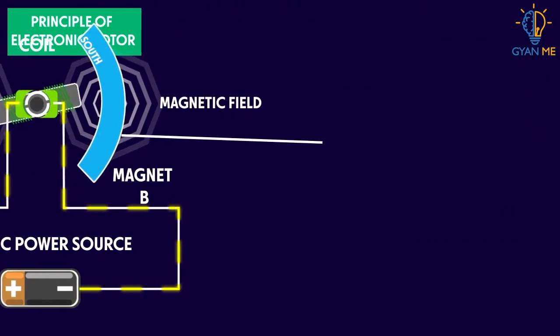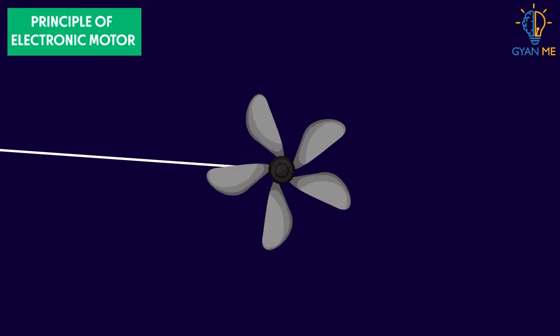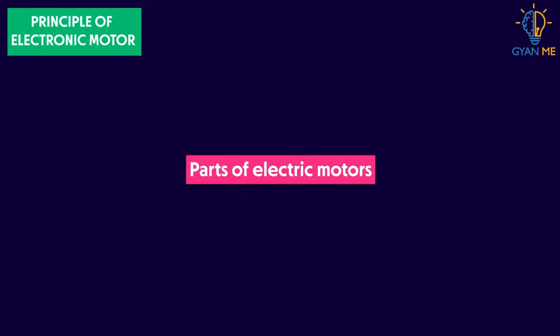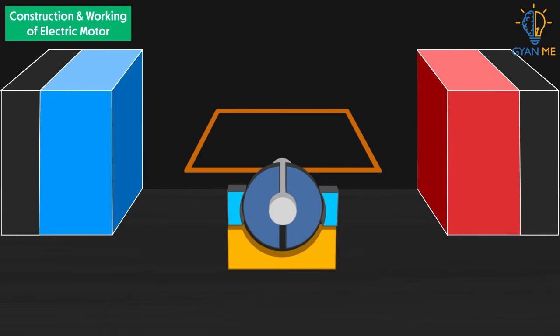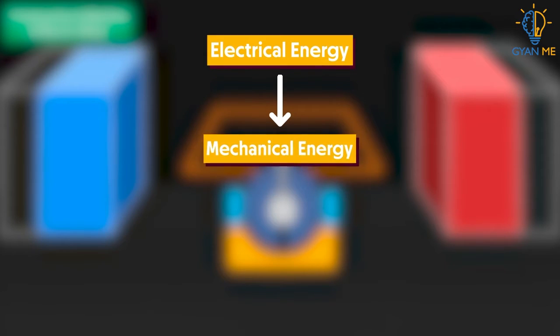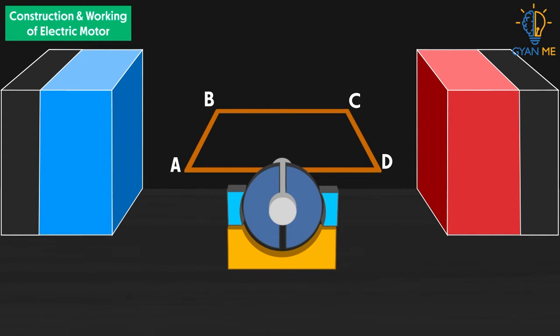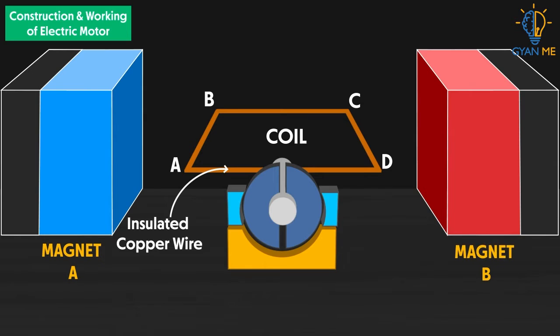But how can this principle lead to the rotation of the fan blade? To understand how the fan blade rotates, we need to understand the parts of the electric motor and how these parts function to make the blades rotate. The electric motor is constructed to convert electrical energy into mechanical energy and mechanical energy into rotational motion. The motor consists of a rectangular coil ABCD of insulated copper wire that is placed between the poles of a magnet. The two ends of the coil are connected to the two half rings P and Q. These rings are called split rings as they are split apart from the center into two parts. It is also known as commutator.